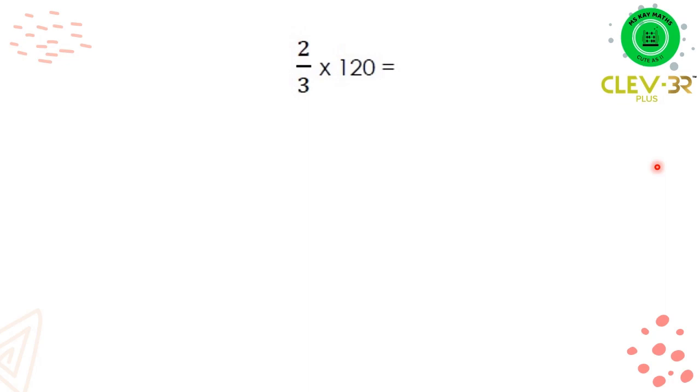So we have 2 over 3 times 120. Okay, there are so many ways to solve this question. But for today, let's look at the denominator.